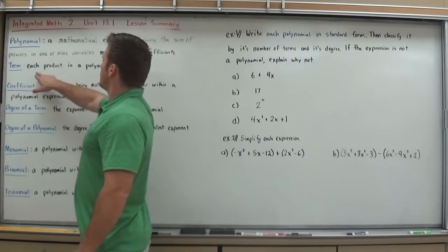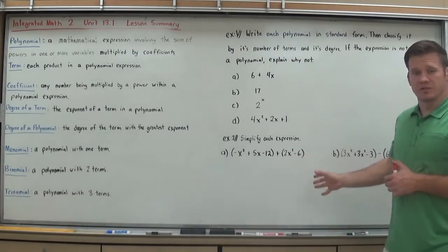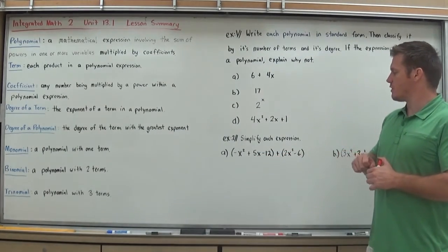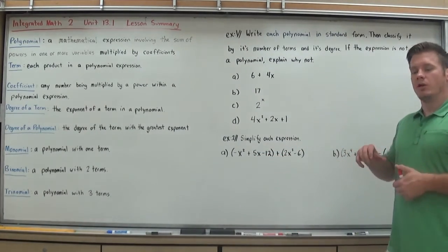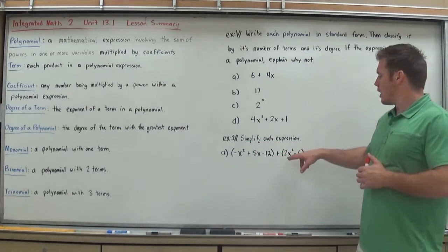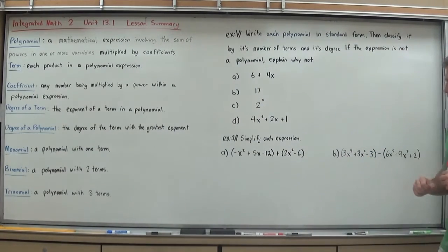What is a term? A term is each product in a polynomial expression. So I'm going to use these as my examples. Negative x squared is a term, 5x is a term, negative 12 is a term. You can identify terms because they're always separated by some form of addition or subtraction. 2x squared is a term because it's all multiplied together into one. Negative 6 is a term, 3x to the fourth is a term, 3x squared is a term, negative 3 is a term, etc.